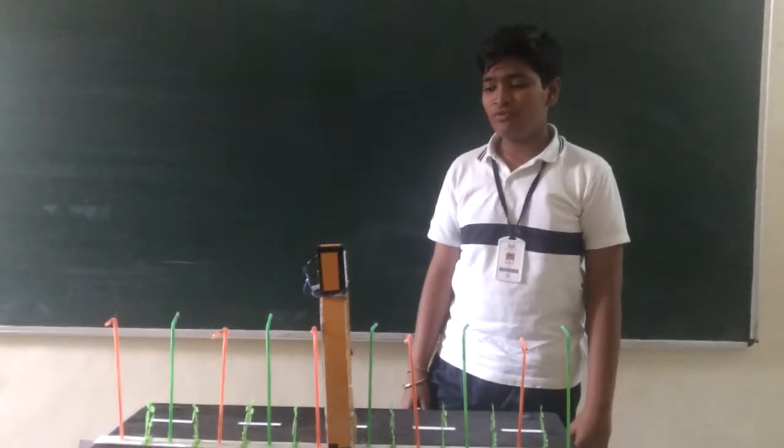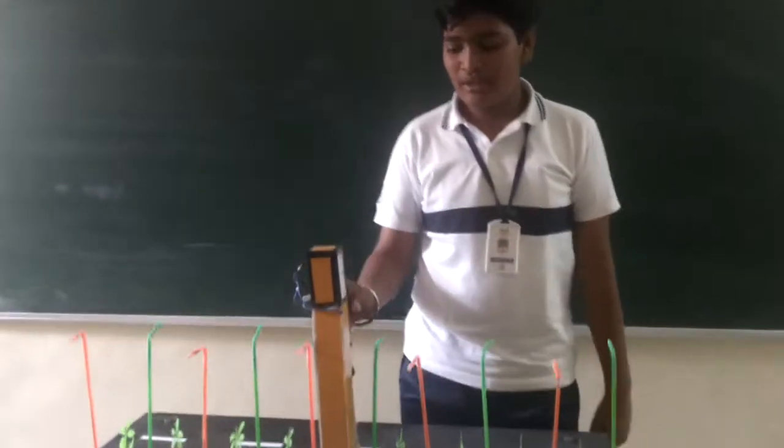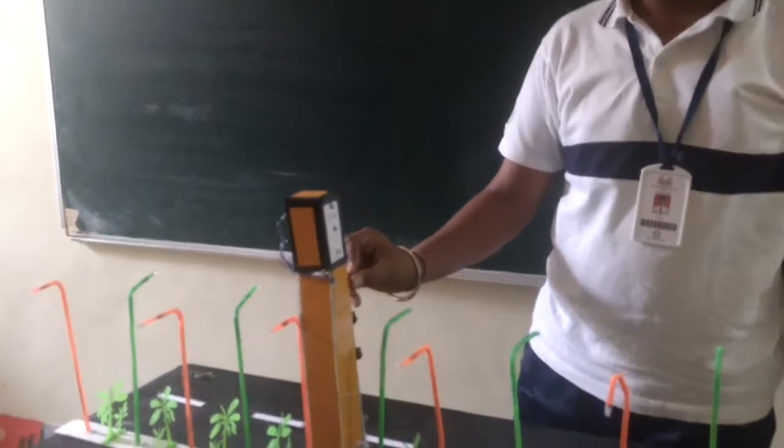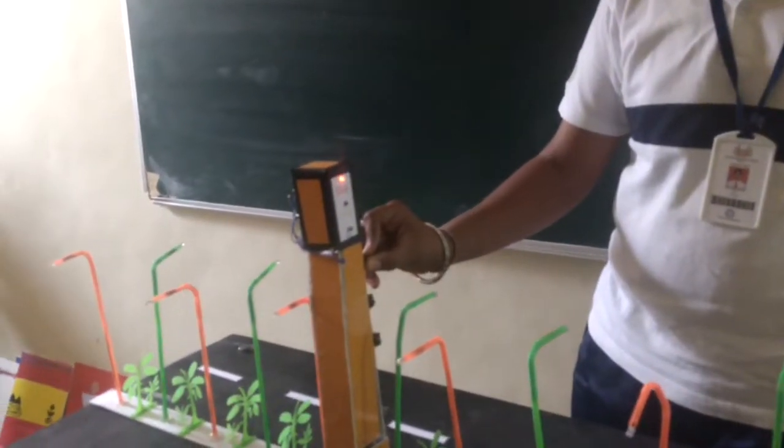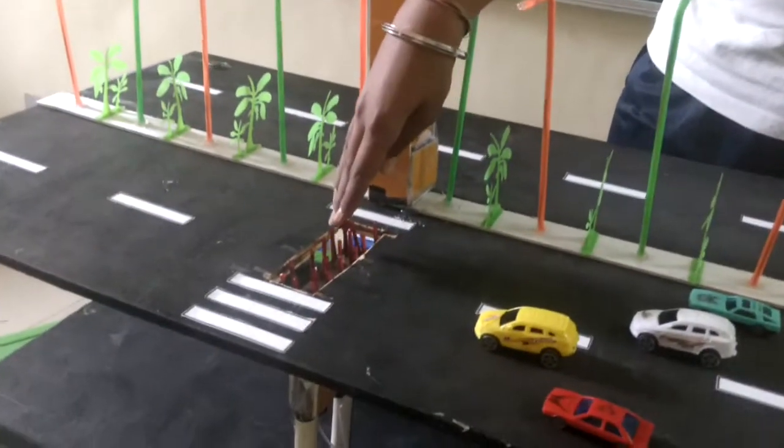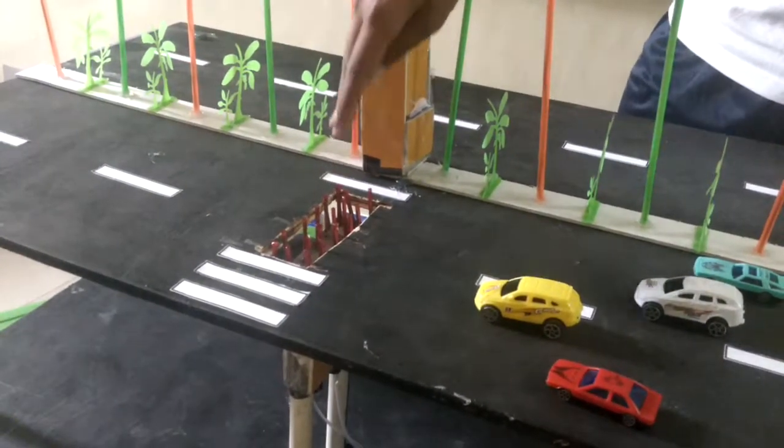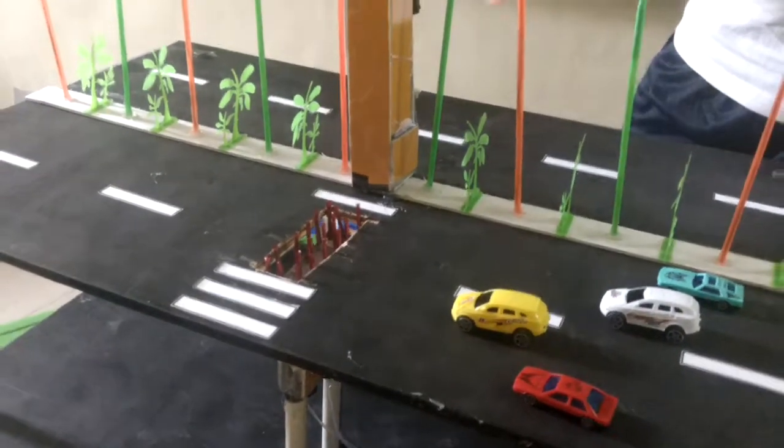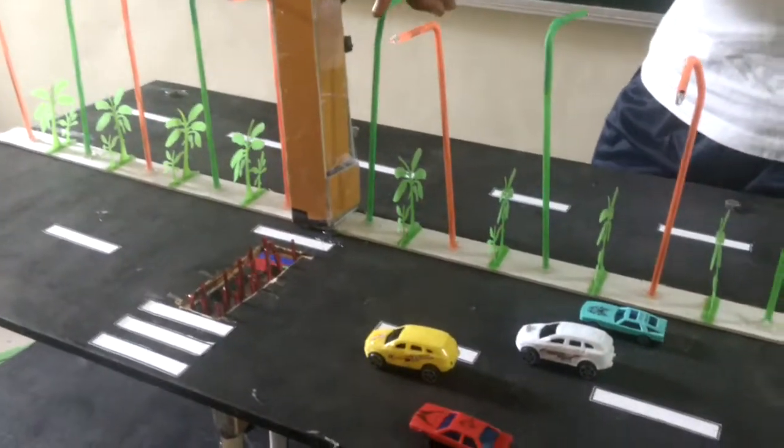Now I will show you how it works. When the red light is on, the nails will come up, and the car will not pass through.